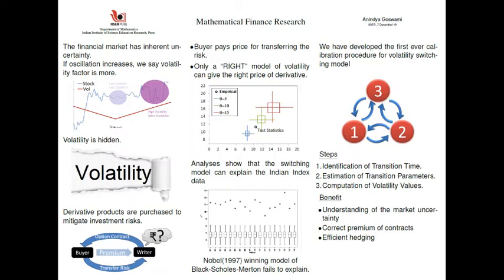Data analysis shows that the switching model for volatility can explain India and Central India's data, while many other popular models fail to explain. What we have done is the following: we have developed the first ever calibration procedure for the volatility switching model, and this helps in understanding market uncertainty, including finding out the correct price of derivatives.